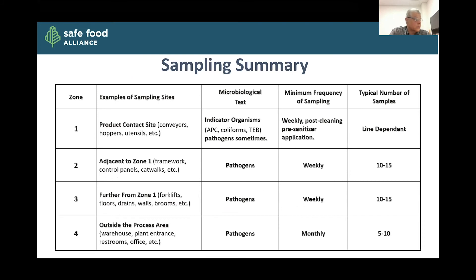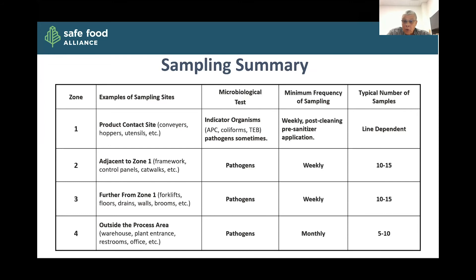A quick summary of samples and types: pathogens are going to be out in zones 2, 3, and 4, done on a weekly or monthly basis, typically anywhere from 10 to 15 in zones 2 and 3. Zone 4 — really remote areas like warehouses and plant offices — may only be monitored on a monthly basis. Zone 1 is often done post-cleaning pre-sanitizer application, looking for indicator organisms. The number of samples will be line-dependent, depending on your product and process — you really have to do your own on-site risk assessment. For microbiological sampling, you probably want to do that at least weekly.